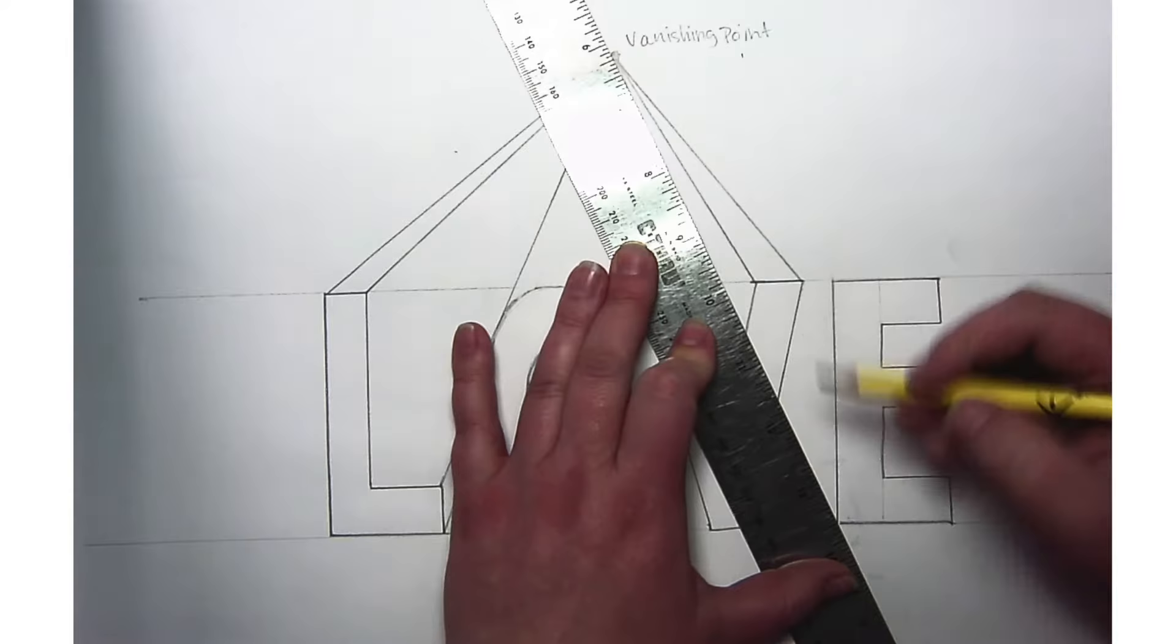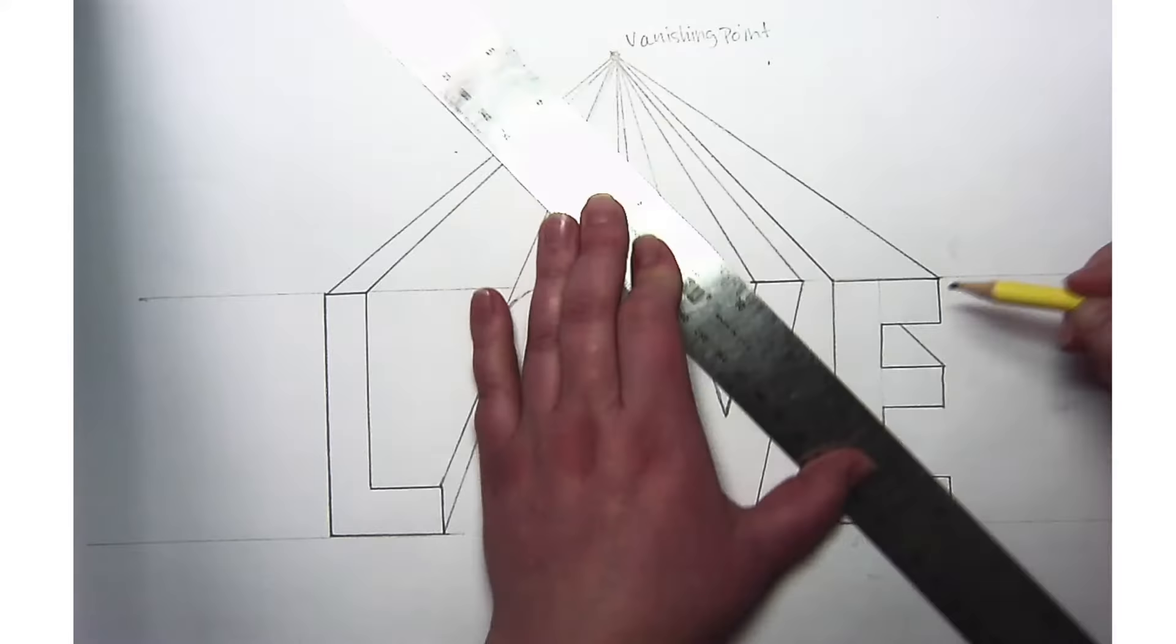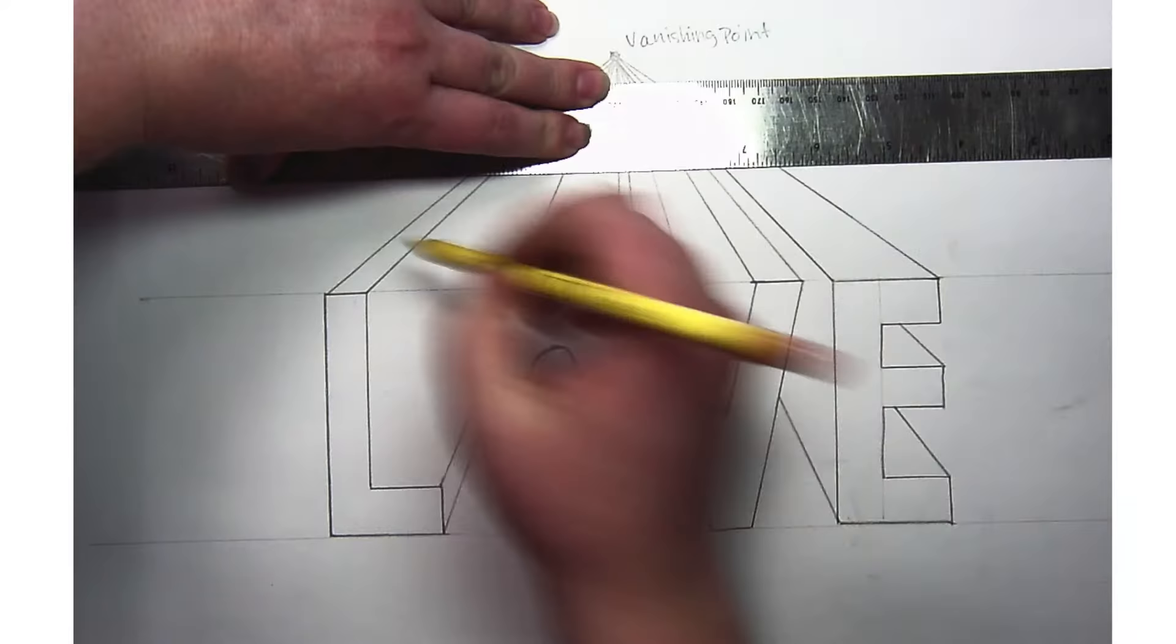See, I'm not drawing all the way through for these E's - I'm just making short lines. Now I decide how far back in the distance I want my letters to go, and I just drew another horizontal line across to decide how far those letters go back.